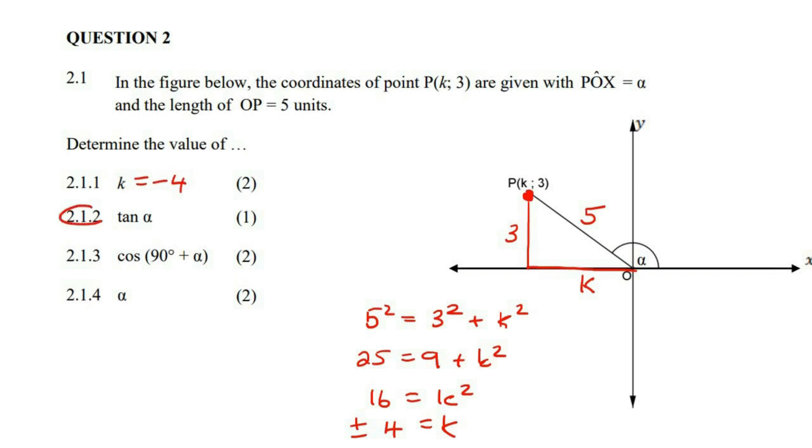This question is asking us for tan alpha. Now remember, when they say this is the angle, you just forget about that and just pretend that it's over here. Now we're going to use tan. So tan is always equal to, if we think about SOHCAHTOA, tan is opposite over adjacent.